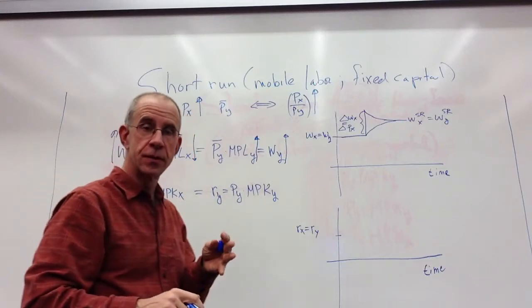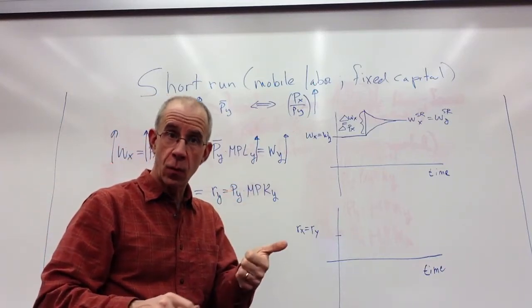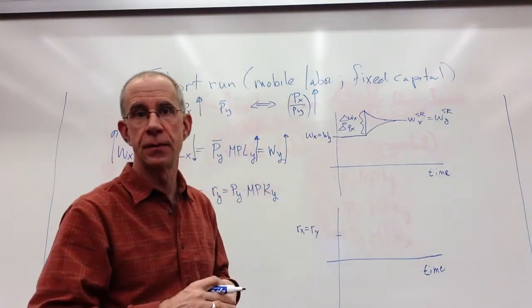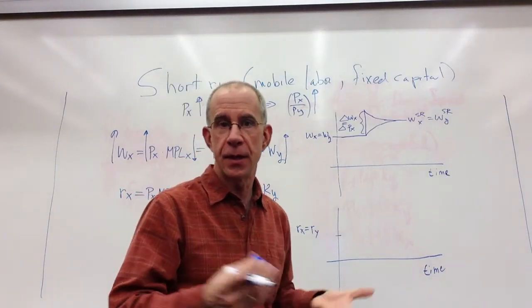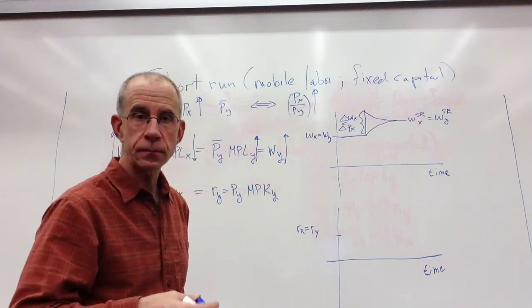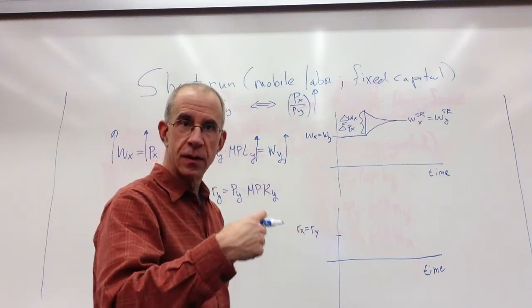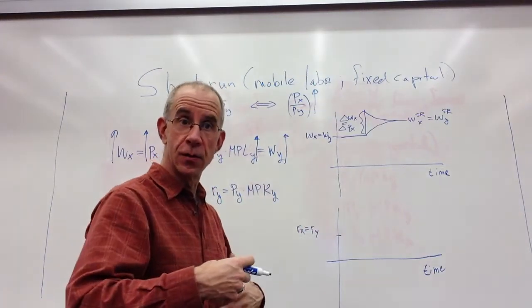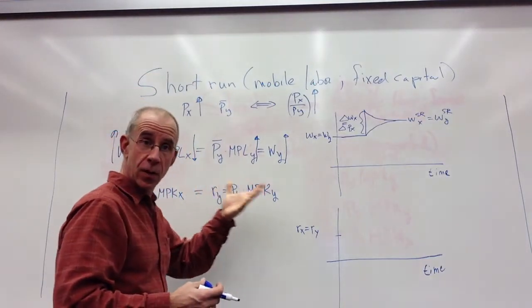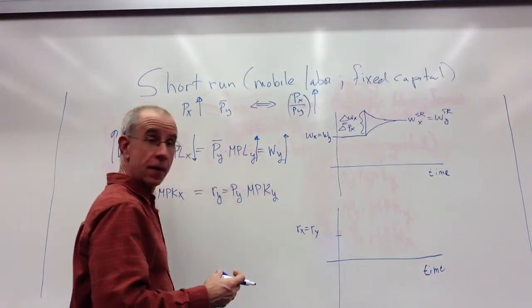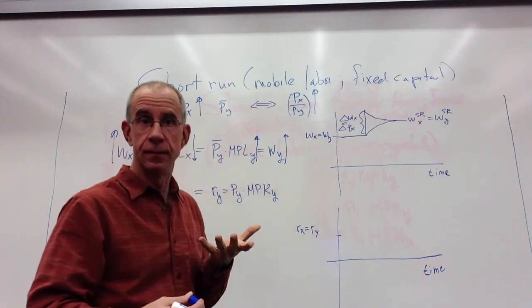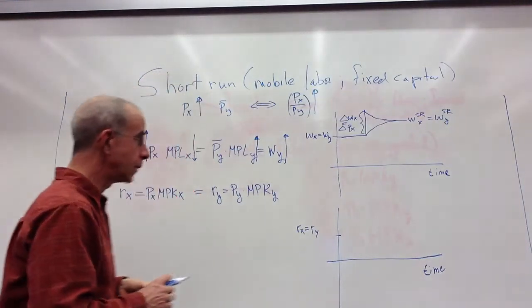The wage does rise, but it rises by less than the price rise in X. Workers generally can buy more of Y. They've had an increase at the end of the short run. Let's say the wage went up by 10% and the price of Y hadn't changed. You can buy more Y. But if the price rise of X was 20%, but the wage only goes up by 10%, then they can buy less X. Whether workers are better off or worse off depends on the combination of X and Y that they finally want to consume.